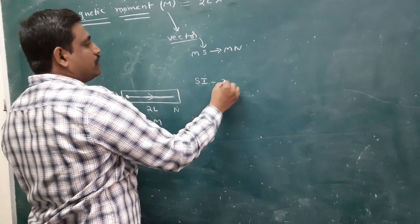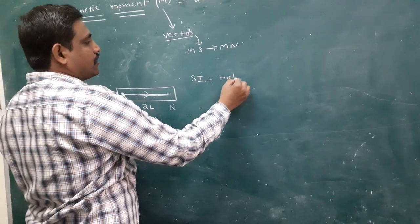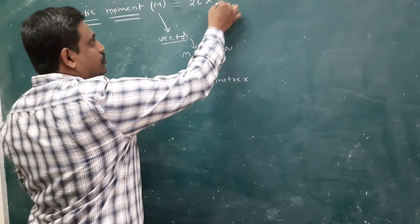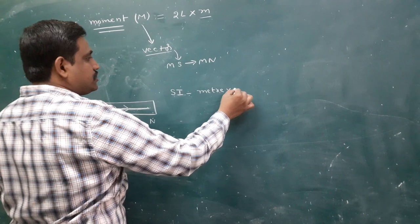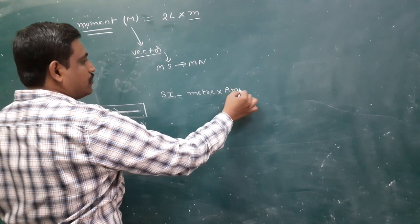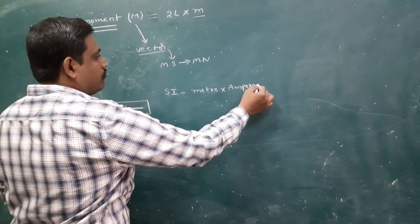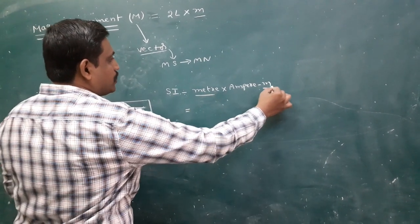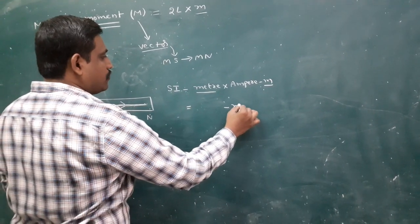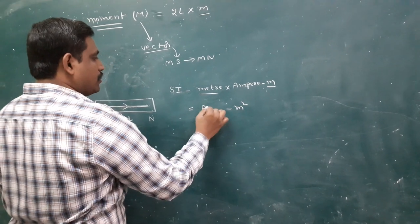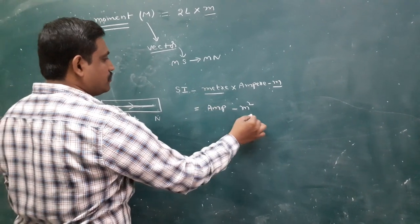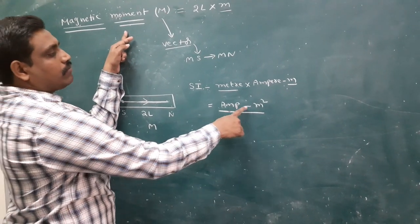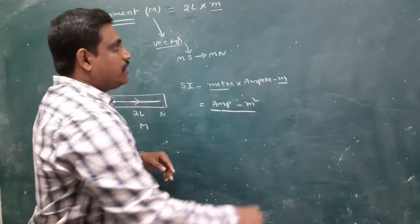According to the formula I can write: magnetic length has units of meter, and pole strength has units of ampere·meter. So the SI unit of magnetic moment is meter into ampere·meter, which gives ampere·meter squared — that is, A·m².